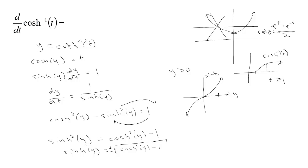So, if we know that the value of y is greater than 0, which we do because the cosh inverse only gives us numbers that are positive by the way we defined it to have an inverse, the way we cut it off, then we know that the sinh of y is positive. So, we can ignore this negative sign.